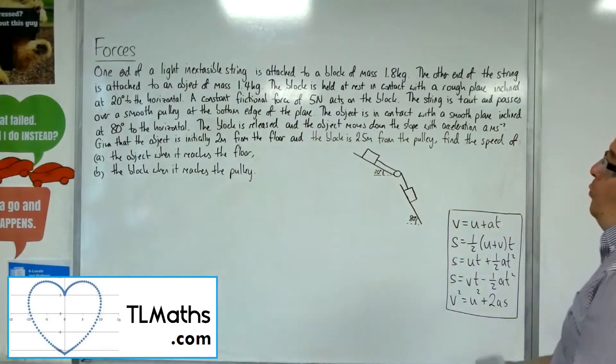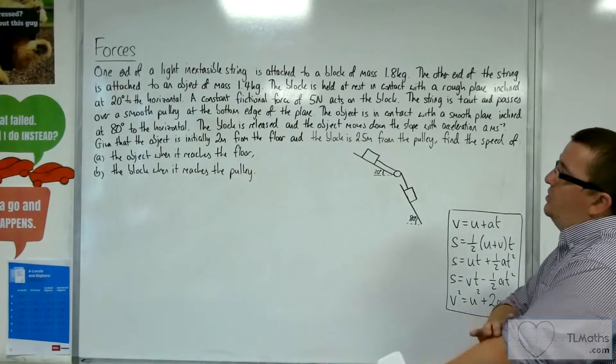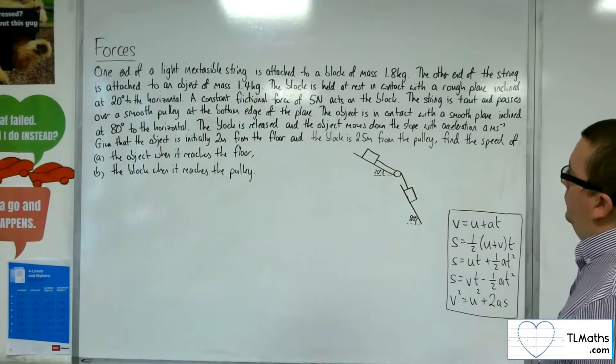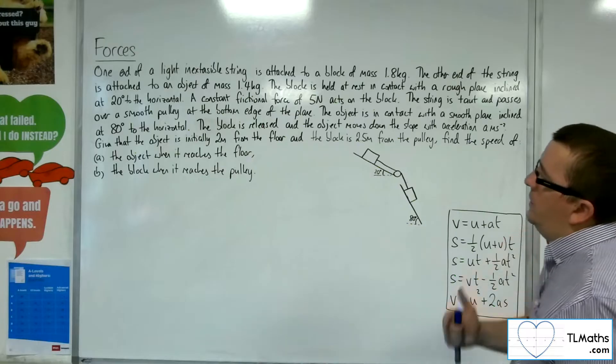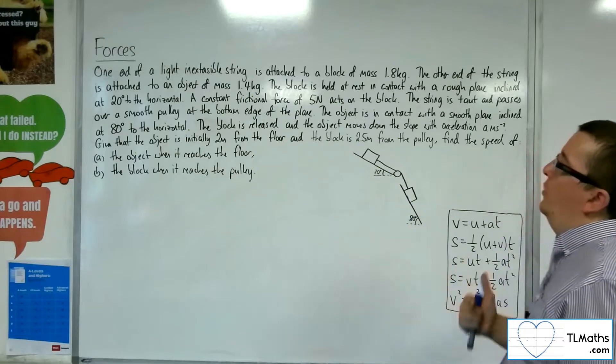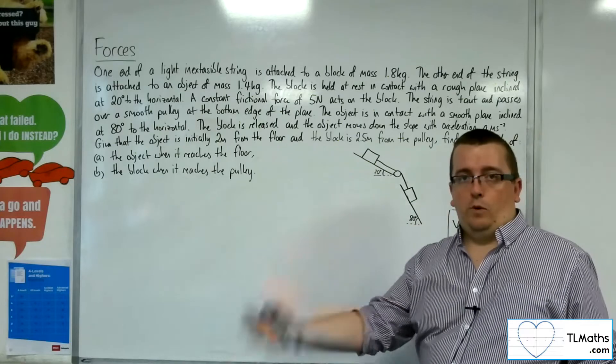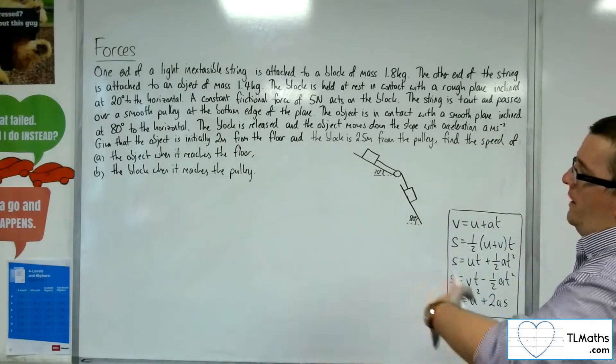In this problem, we've got one end of a light inextensible string attached to a block of mass 1.8 kilos. The other end is attached to an object of mass 1.4 kilos. So we've got a block 1.8 kilos, object 1.4 kilos.